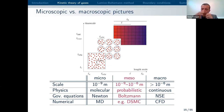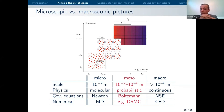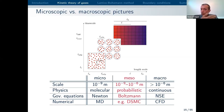On the mesoscale, which is somewhere in between — where you have groups of molecules and you're not interested in the single molecule but know that something is happening on the molecular level — you have a probabilistic view. One governing equation you can use for that is the Boltzmann equation. There's also the Enskog equation. Direct simulation Monte Carlo (DSMC), for example, would be a numerical method to deal with that.